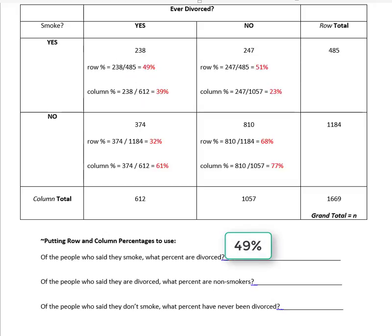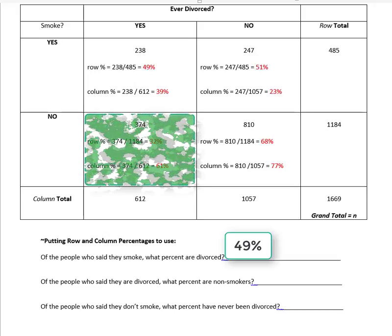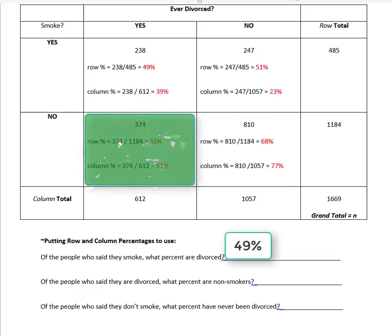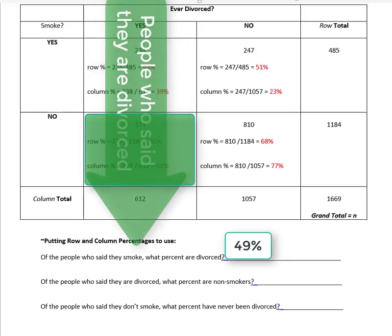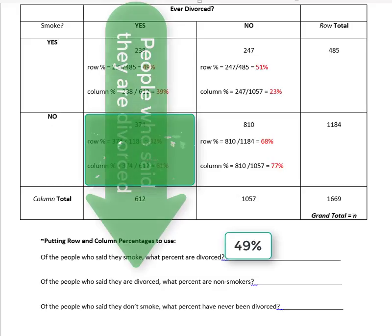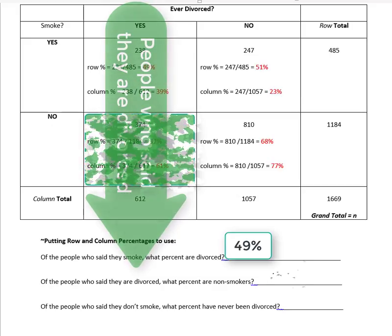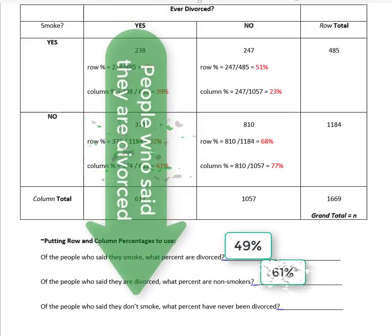The next question asks: of the people who said they are divorced, what percent are non-smokers? The cell is divorce yes and smoke no. Since we're starting with 'of the people who said they are divorced,' that's focusing on just the column of divorced people, so that would be a column percent — 61%.